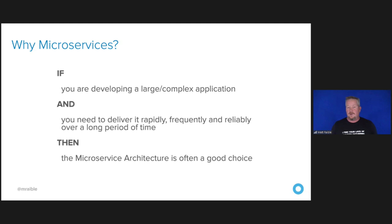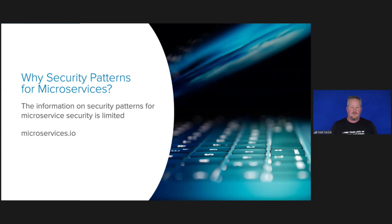This is a quote from Chris Richardson, a good friend of mine and an expert on microservices. He says, if you're developing a large and complex application and you need to deliver it rapidly, then the microservices architecture is often a good choice. So you might ask, why this talk — why security patterns for microservices? The information on security patterns for microservices is just limited. Chris Richardson put together microservices.io, and if you go there and look, for security there's just one pattern: access token.